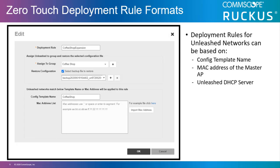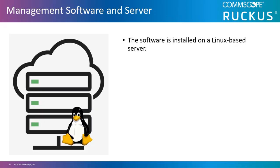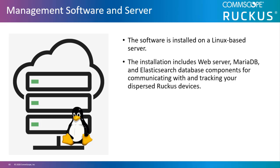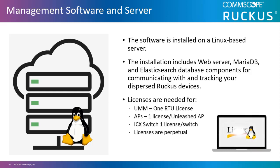Deployment rules for an Unleashed network can be based on a config template name such as Hard Rock Coffee, the MAC address of the Master AP, or an Unleashed DHCP server. The software is installed on a Linux-based server. The installation includes web server, Maria database, and Elasticsearch database components for communicating with and tracking your dispersed Ruckus devices. Licenses are needed for the UMM — one license for UMM, one license per Unleashed AP, and one license per ICX switch. The licenses are perpetual.